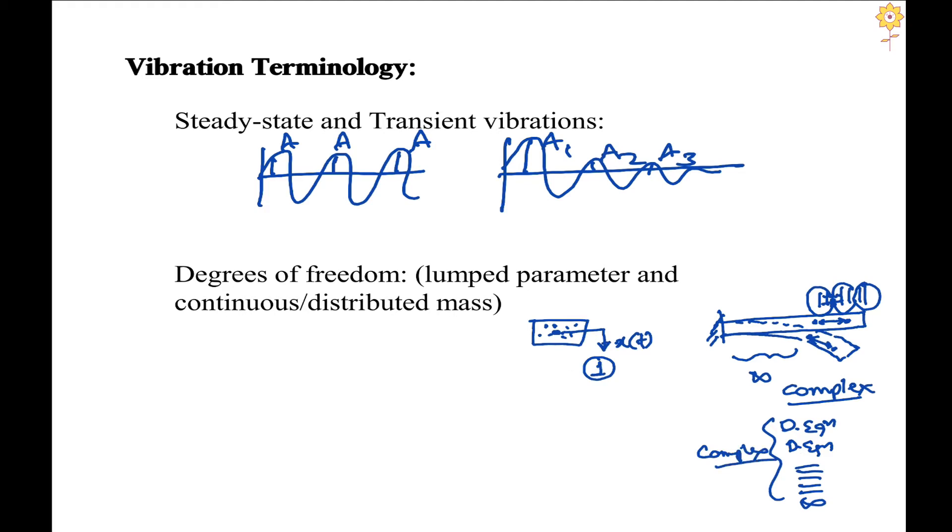What we do as engineers, we try to simplify the problem. The given continuous system will be modeled in terms of discrete number of lumped parameter systems or lumped masses, and then we solve for this. Solving this finite number of degree of freedom systems is comparatively easy.